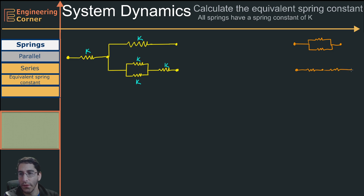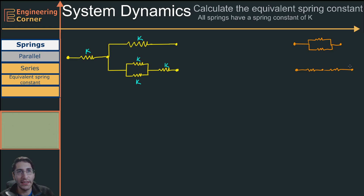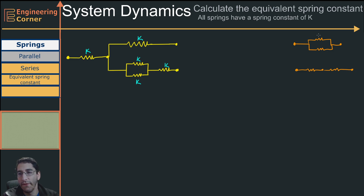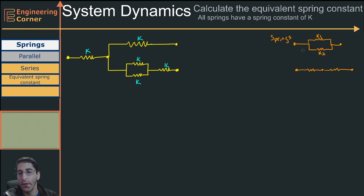These sort of look like resistors, but when we're dealing with springs it's reversed. Springs in series are like resistors in parallel. Springs in parallel are like resistors in series. So if I have a spring constant k1 and a spring constant k2, my equivalent spring constant ke is going to be k1 plus k2.